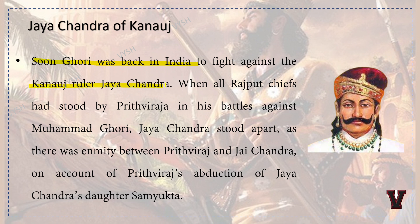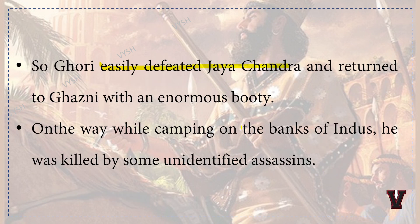Jayachandra of Kannauj: Ghori was back to fight against the Kannauj ruler Jayachandra. When all Rajput chiefs had stood by Prithviraj in his battle against Muhammad Ghori, Jayachandra stood apart due to enmity — on account of Prithviraj's abduction of Jayachandra's daughter Samyukta. Ghori easily defeated Jayachandra and returned to Ghazni with an enormous booty. On the way, while camping on the banks of the Indus, he was killed by unidentified assassins.